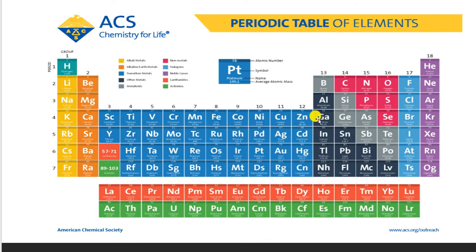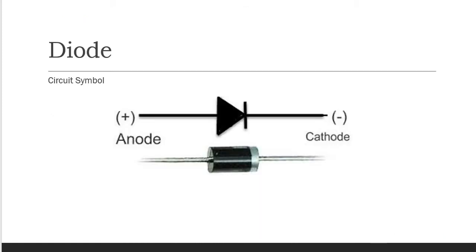From the periodic table, the group 3 elements aluminum, gallium, and indium have atomic numbers 13, 31, and 49 respectively. A diode is a two-terminal, single-junction device that conducts in only one direction. One terminal is known as the anode and the other is known as the cathode. The silver ring on the physical diode indicates the cathode.